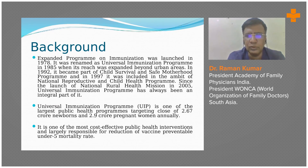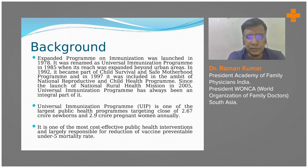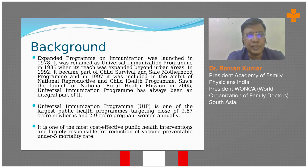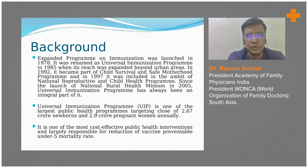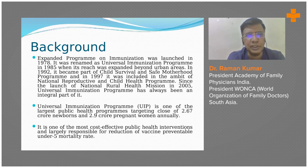First of all, we will briefly look at how the government looks at it and what the government facilities are, and how it has evolved over a period of several decades in India. Initially, it was known as the Expanded Program on Immunization in 1978, and it was renamed as the Universal Immunization Program — UIP — in 1985, when it was expanded beyond urban areas across urban and rural areas.